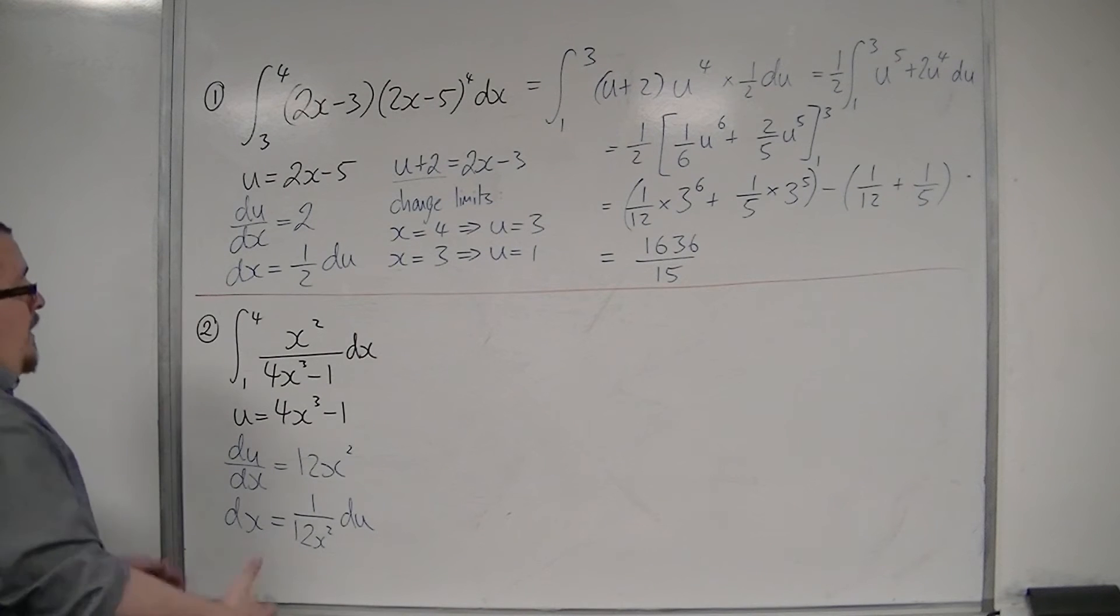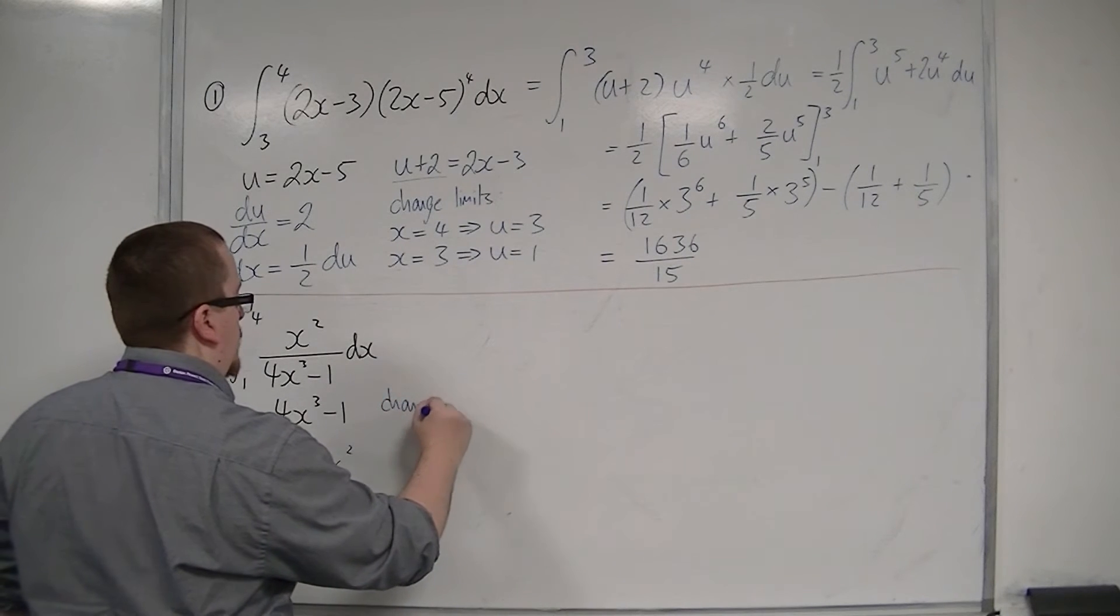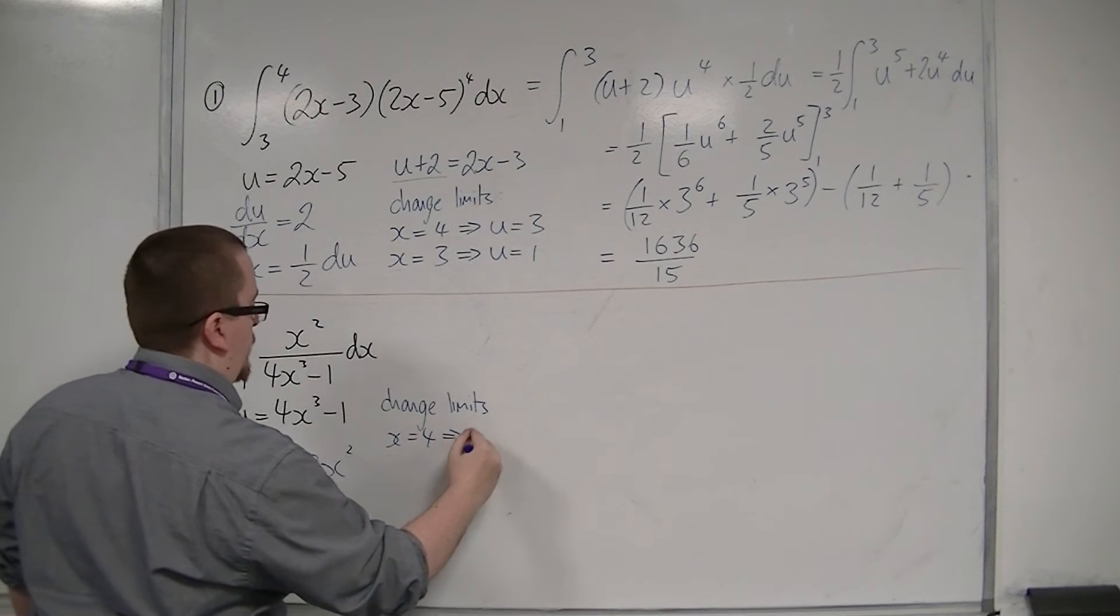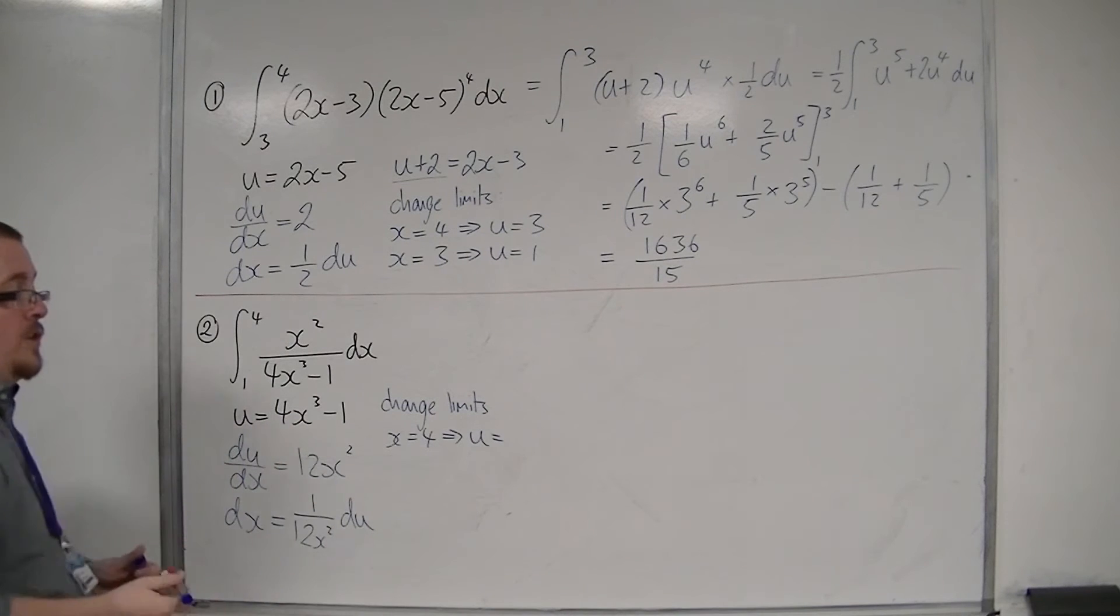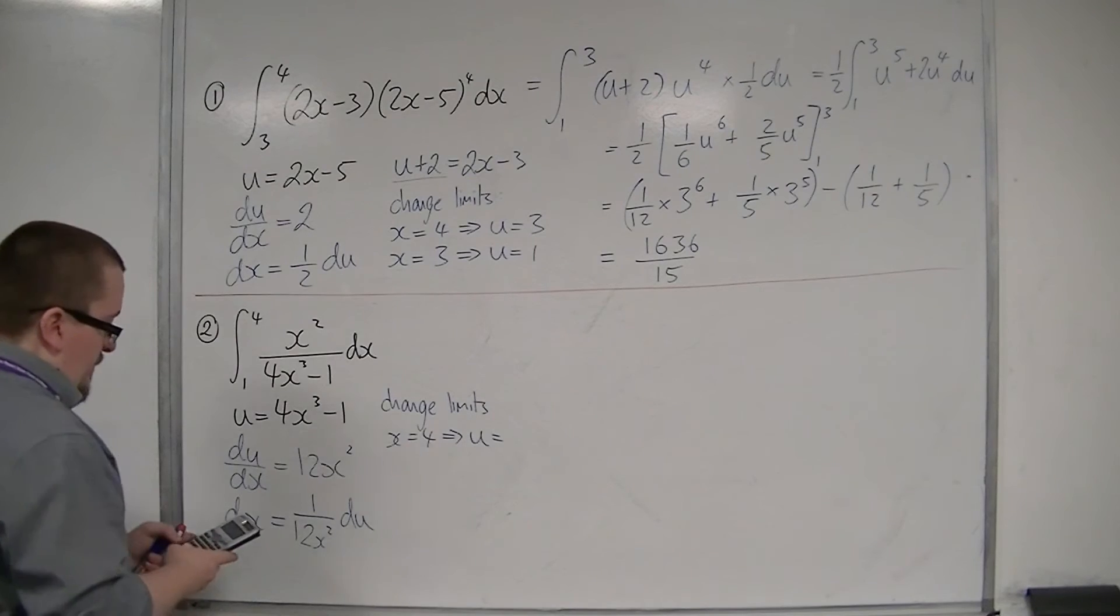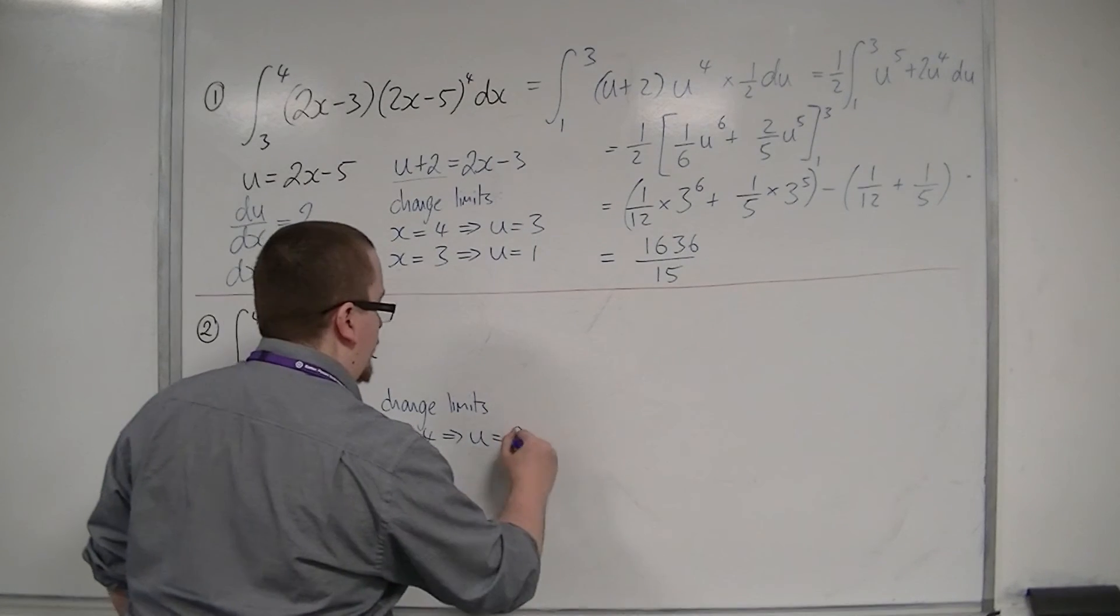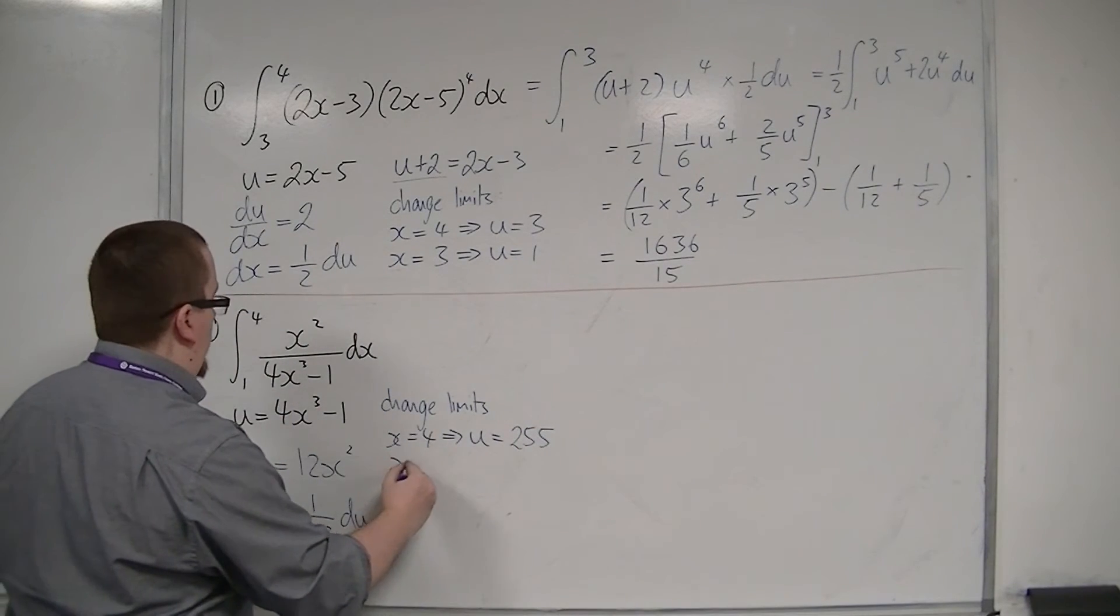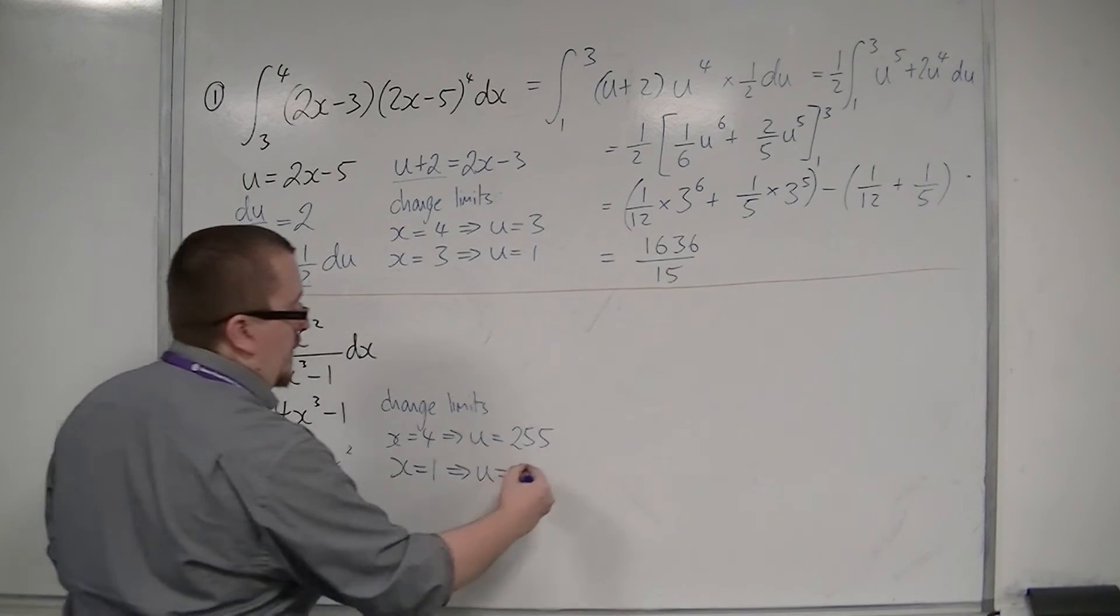Then, I'm going to need to change the limits. So when x is 4, I have 4 lots of 4 cubed, so 4 times 4 cubed, take away 1, so 255. And then when x is 1, I have 4 take away 1, so 3.